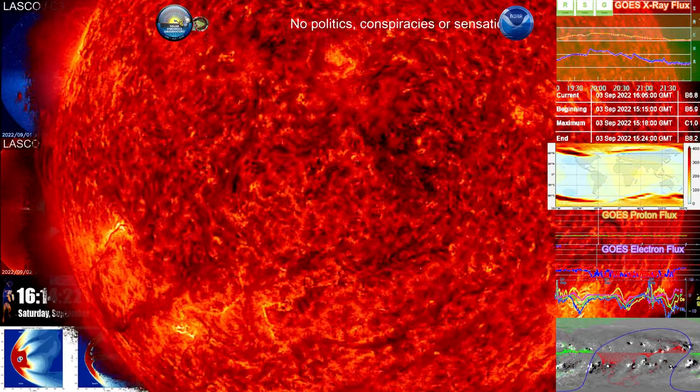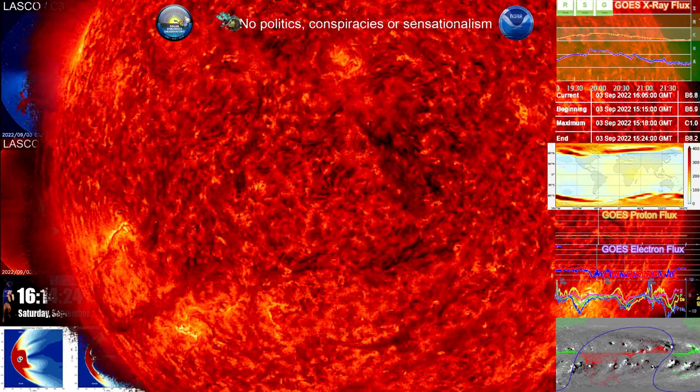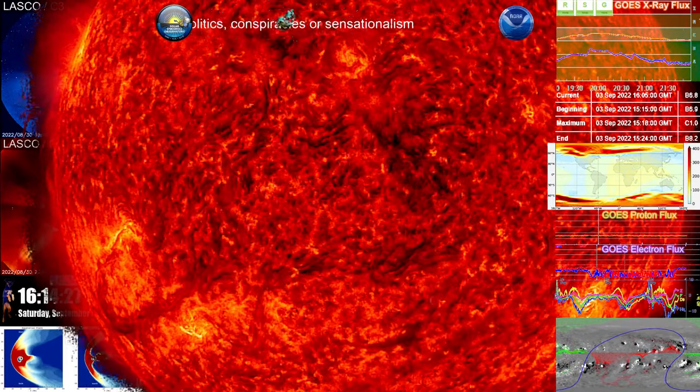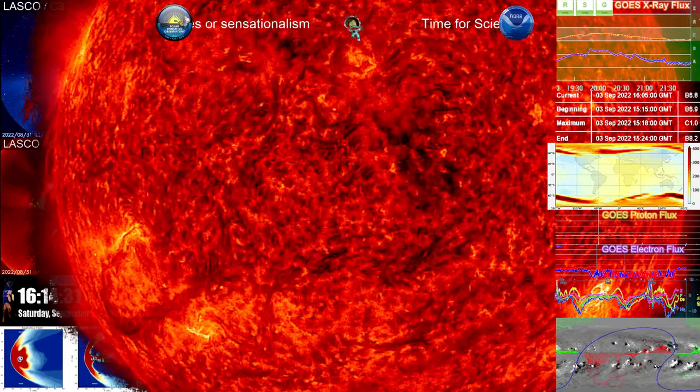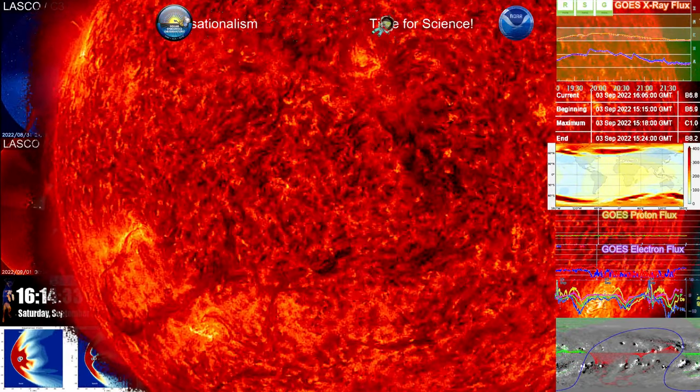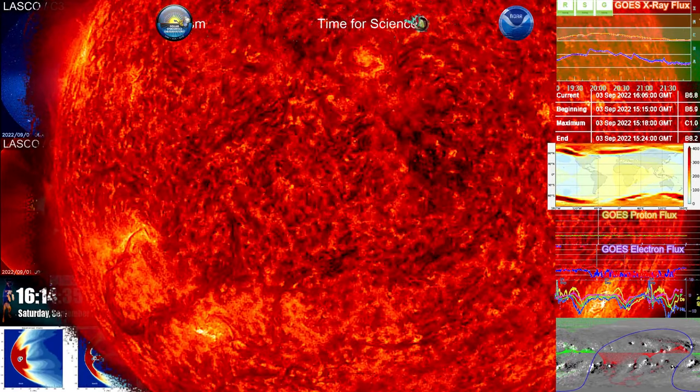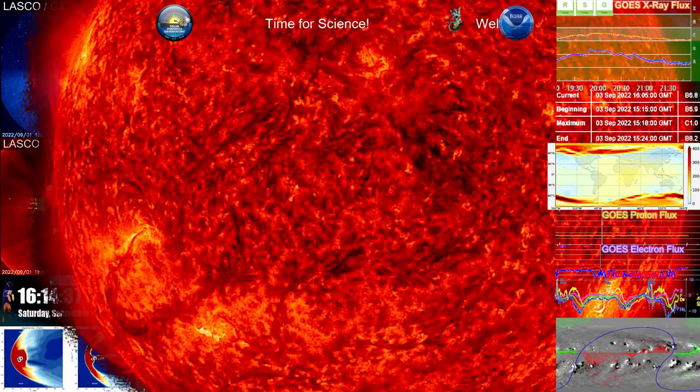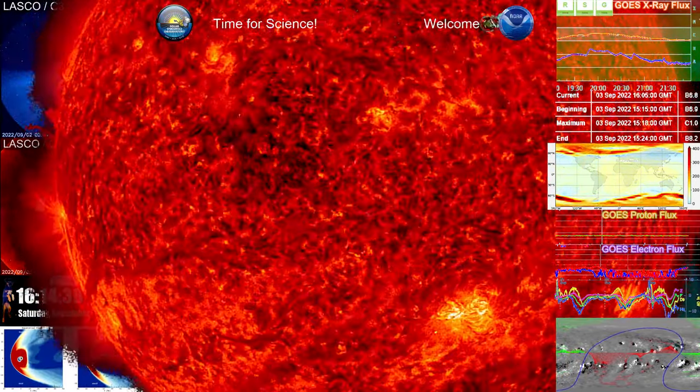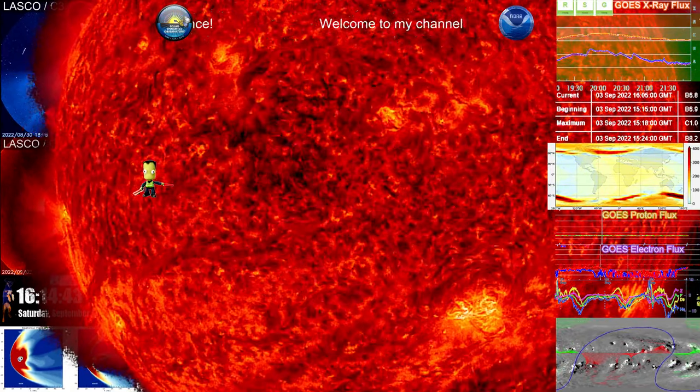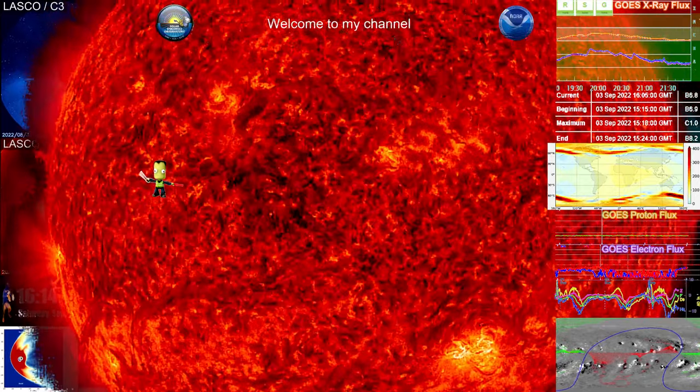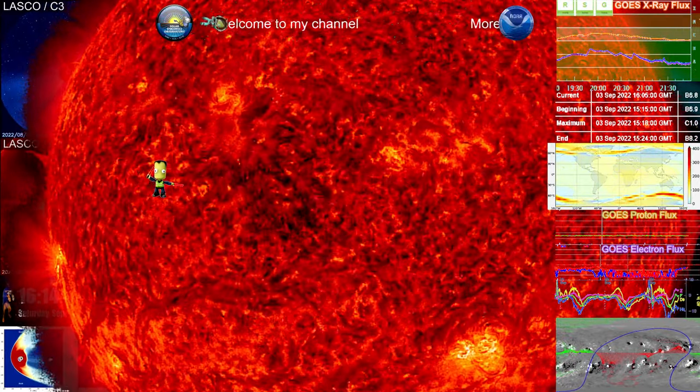This eruption had an ICME that went south and east. However, there was additional plasma that did go more north. And if you watch closely, you'll see that this plasma actually does not become an ICME, which is an interplanetary coronal mass ejection. This plasma gets pulled back down to the sun as plasma rain, reaching as far north as just above the equator.